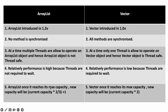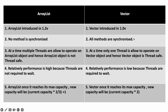For ArrayList, once it reaches max capacity, the new capacity will be current capacity multiplied by 2 divided by 3, plus 1. But in Vector, once it reaches max capacity, the new capacity will be double — that is, current capacity multiplied by 2. So, these are all the main differences between ArrayList and Vector. This is all about this video. Thanks for watching.